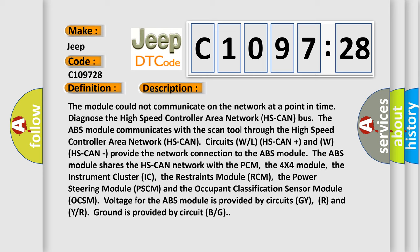The ABS module shares the HS-CAN network with the PCM, the 4X4 module, the instrument cluster IC, the restraints module RCM, the power steering module PSCM, and the occupant classification sensor module OCSM. Voltage for the ABS module is provided by circuits GY and R, and ground is provided by circuit BG.